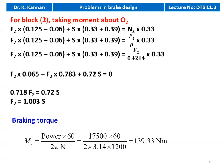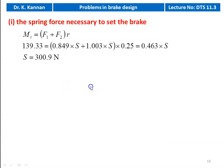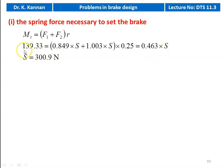From the given power, we calculate braking torque: Tb = Power × 60 / (2πN) = 17,500 × 60 / (2 × 3.14 × 1200) = 139.33 Nm. The spring force necessary to set the brake: MT = (F1 + F2) × R, so 139.33 = (0.849S + 1.003S) × 0.25 = 0.463 × S. Solving gives S = 300.9 Newton.